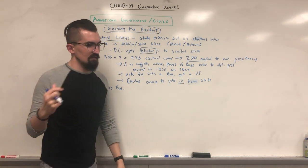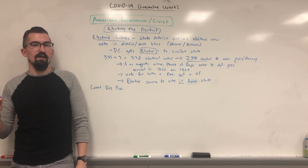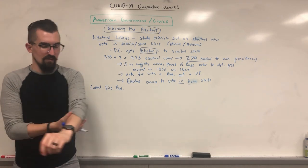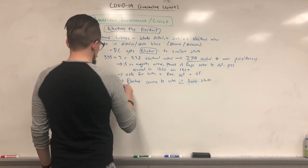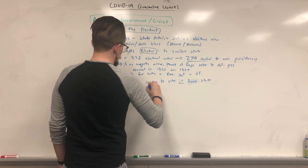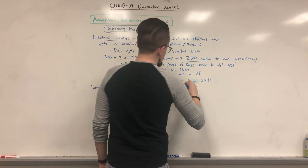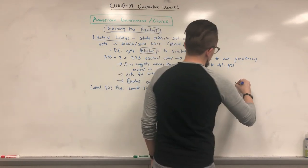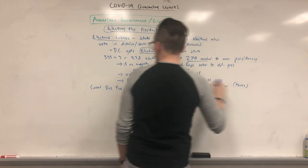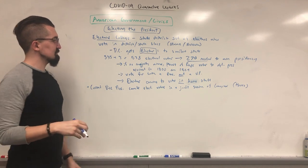For example, in the 2016 election between Trump and Clinton, Vice President Biden officially counted the actual electoral votes in a joint session of Congress, which is held in the House of Representatives because it's a larger arena. That's pretty much the election process as far as the formal details go.